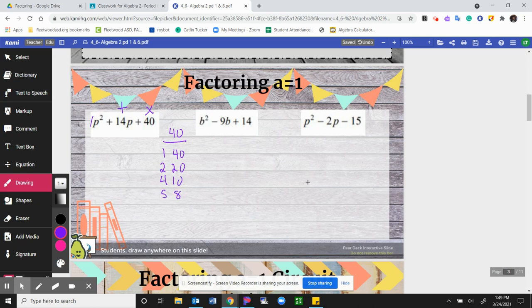5 and 8, 6 doesn't go into 40, 7 doesn't go into 40, and I already have my 8 here. So from this list, I'm looking for something that adds up to 14, that middle number. So I get 4 and 10. So all we do here is we have a P plus 4 then, and then a P plus 10.